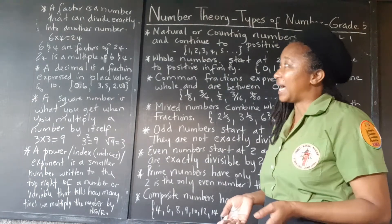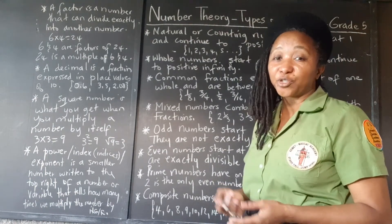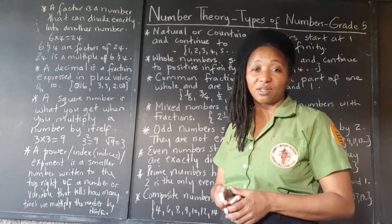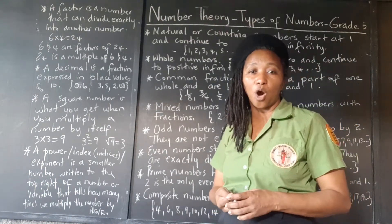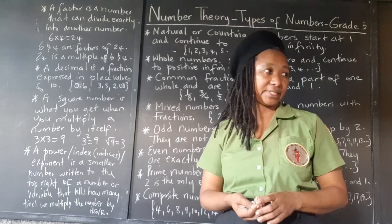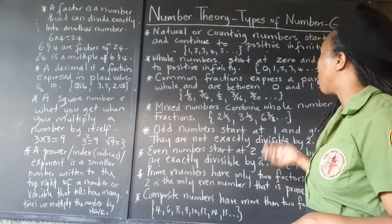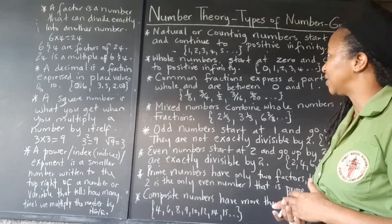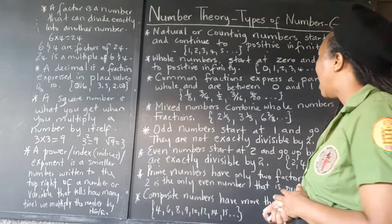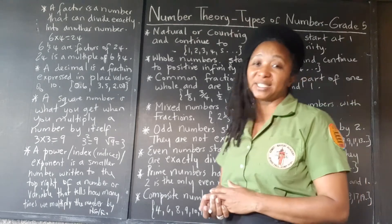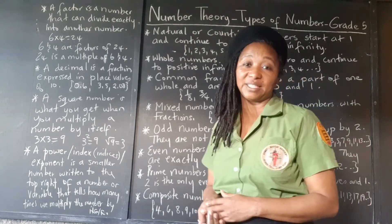So we're starting with the natural numbers, otherwise called counting numbers. Natural or counting numbers start at 1 and continue to positive infinity.